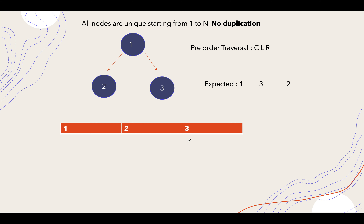The most important thing to understand in this question is that all the nodes are unique, starting from one till n, and there is no duplication allowed. Had it been a question with duplicates, the approach would have been totally different.